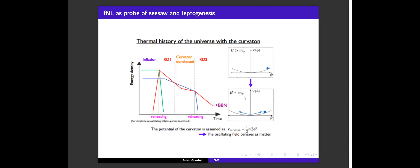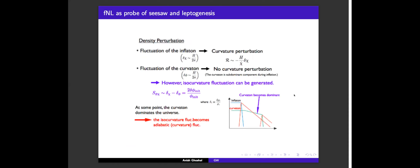You can then ask what happens if you don't have an m-squared phi-squared potential — that is, you don't have a particle that oscillates simply around its minimum. Instead, it starts at some other point. Then the story of the axion-like particle comes into play. I'm going to show you results for how this looks.